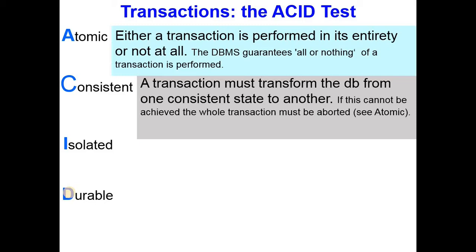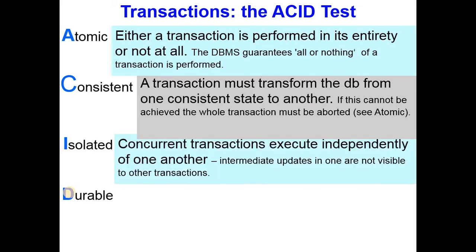The third property is that transactions are isolated. If you have several transactions, they shouldn't interfere with each other — they shouldn't influence each other. That's especially important when two transactions are happening at the same time. You'll see more of that in the rest of this video.